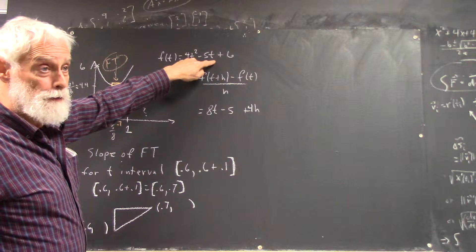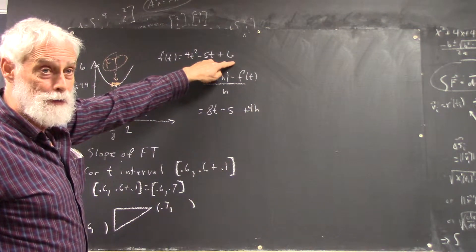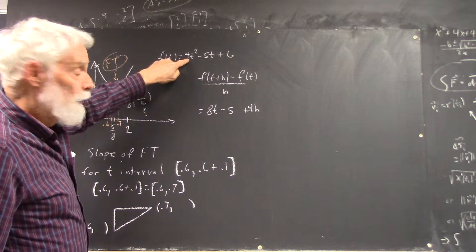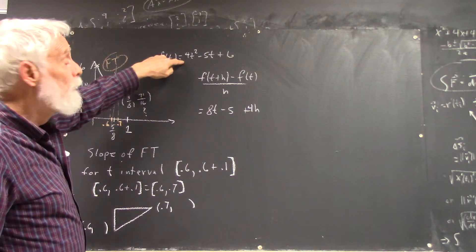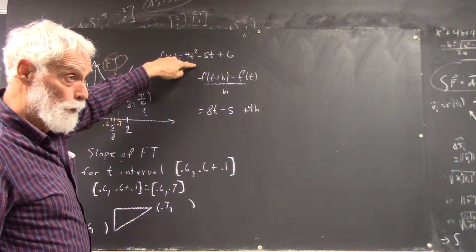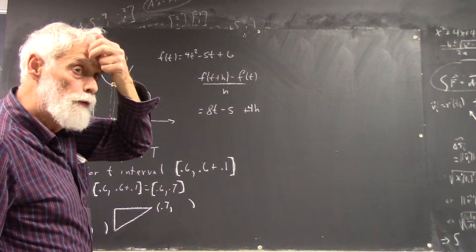negative 5 times 0.6 is negative 3, so that added to 6 gives you 3, and then you've got to multiply that by 4t squared. t squared is 0.36, 4 times that is 1.44, add that to 3, you get 4.44.